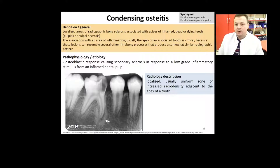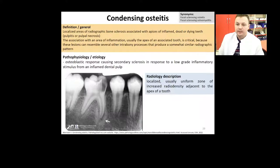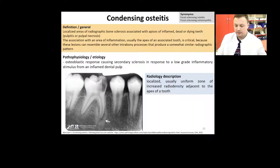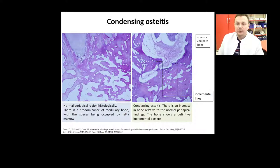Secondary sclerosis of bone is not considered true or classical osteomyelitis. It represents a possible osteoblastic response causing secondary sclerosis in response to a low-grade inflammatory stimulus from an inflamed dental pulp. The classic presentation consists of a localized, usually uniform zone of increased radial density adjacent to the apex of the tooth. Microscopically, it shows replacement of marrow spaces and cancellous bone by dense sclerotic compact bone, which may show prominent inter-segmental lines, fibrosis replacing fatty marrow, and usually no or minimal inflammation.